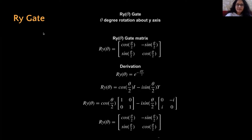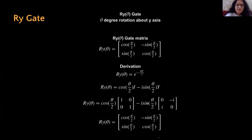Just like the Y gate, the RY gate rotates a qubit to a new position about the Y axis, with the difference that instead of a fixed 180 degree rotation it performs a theta degree rotation that the user can specify. Its matrix is easily derivable using the Y gate and the desired theta degree of rotation, just as in the case of the RX gate. Using Euler's equation, we open it in terms of cosine and sine, and simplifying the calculations gives the matrix we expect. Putting different values of theta produces different rotations about the Y axis.